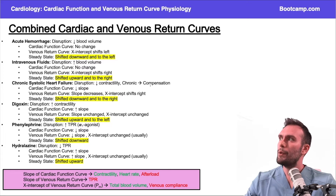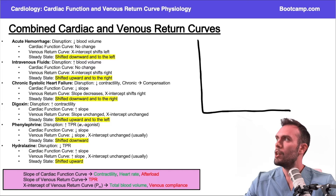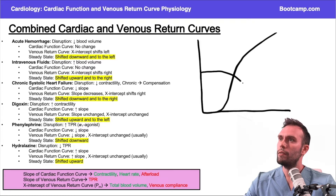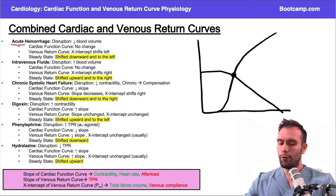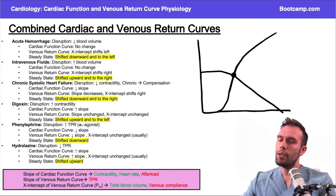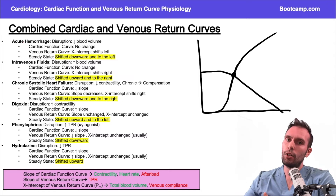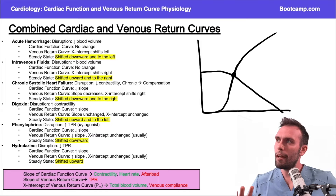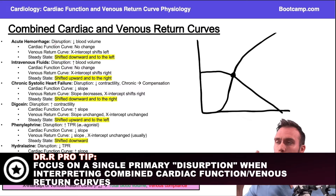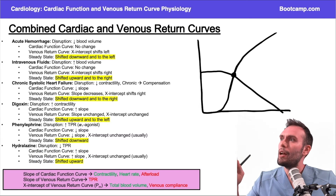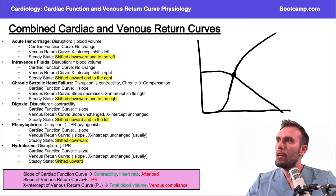Let's go through each scenario and get a rhythm going. First, put up a standard cardiac function curve and venous return curve with the steady state point. For acute hemorrhage — be careful with the word acute versus chronic. With acute, you don't have to worry as much about compensation. Just look at the number one disruption. Acute hemorrhage: what's the number one problem? Loss of blood volume.